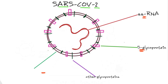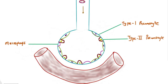Now let's look at the pathophysiology of the disease caused by the coronavirus. As the virus enters the respiratory tract, it travels via the trachea into the bronchi and bronchioles, ultimately reaching the alveoli. Within the alveoli, we have three types of cells: type 1 pneumocytes, type 2 pneumocytes, and macrophages. Adjacent to the alveoli are small capillaries that play an important role in gas transport.